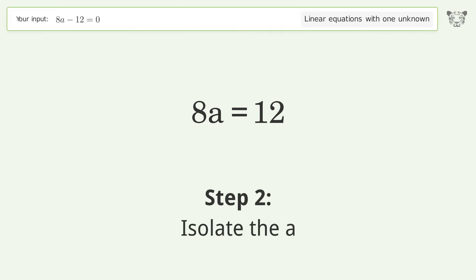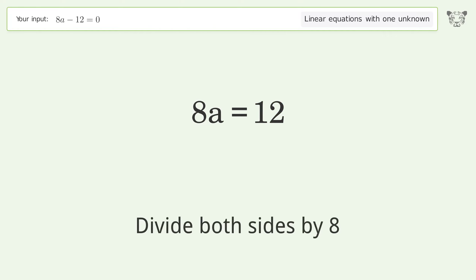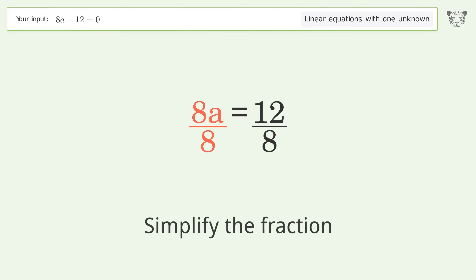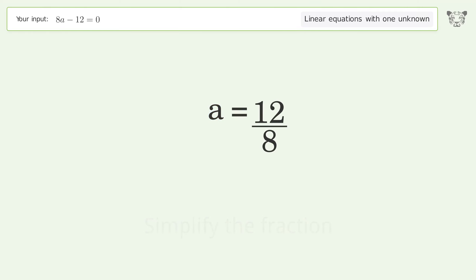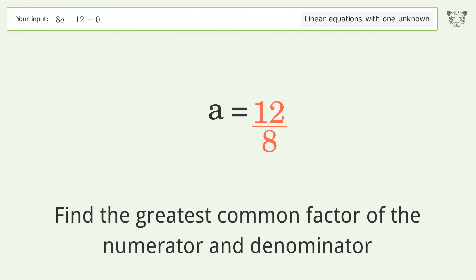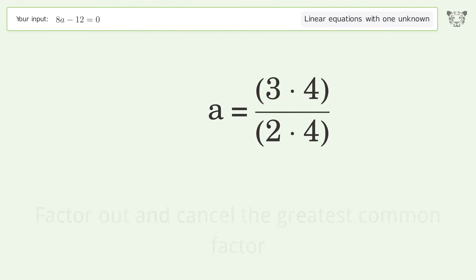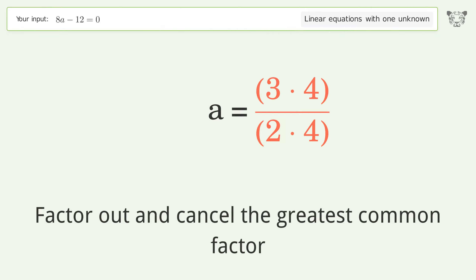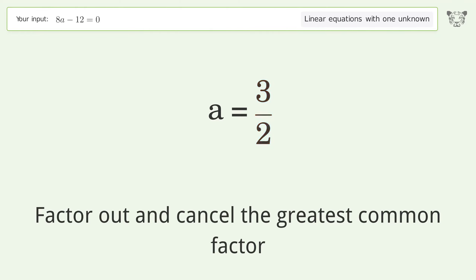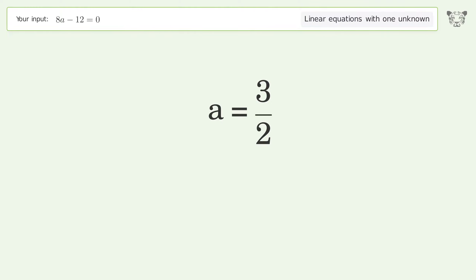Isolate a by dividing both sides by 8, then simplify the fraction. Find the greatest common factor of the numerator and denominator, factor it out and cancel it. The final result is a equals 3 over 2.